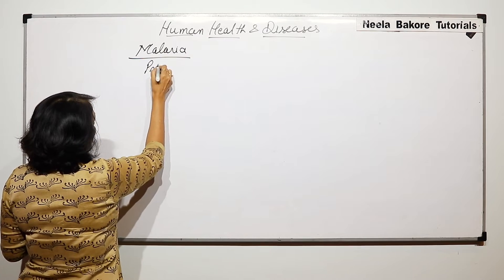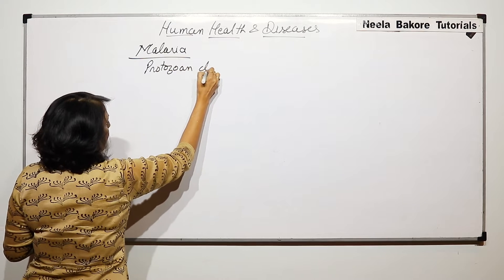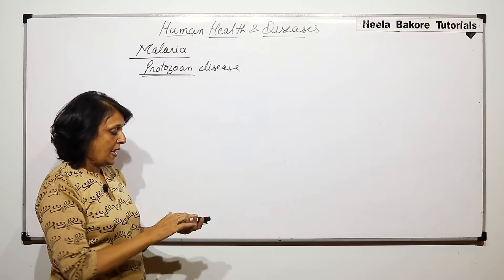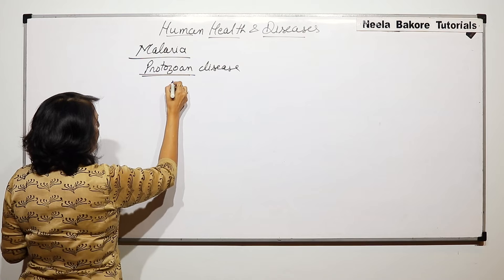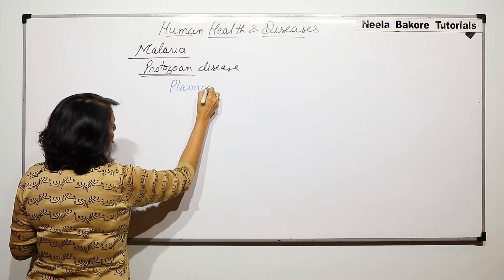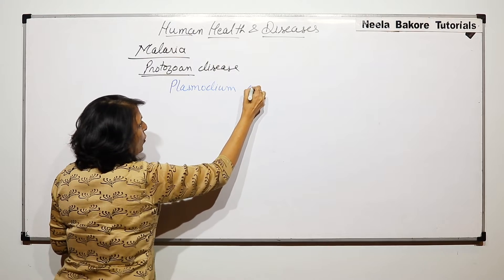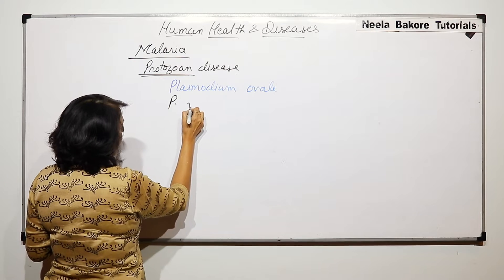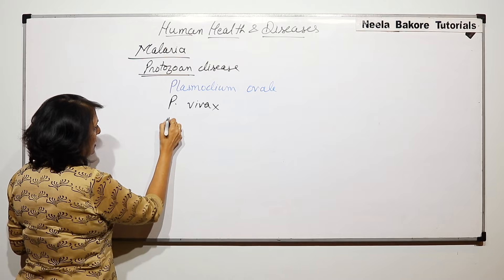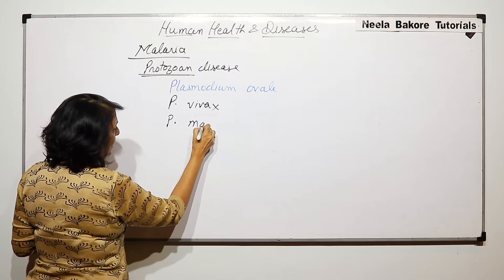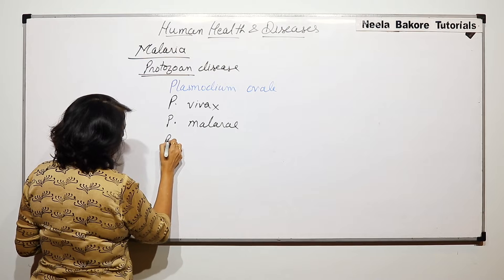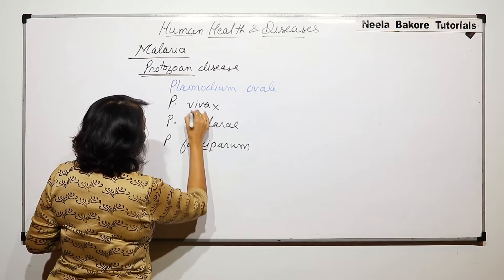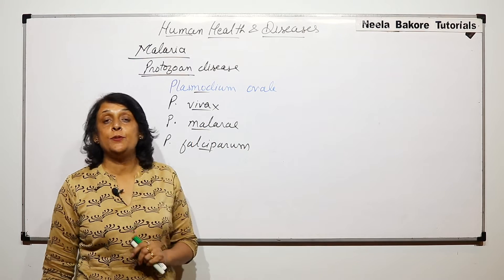It is a protozoan disease. The causative agent is a protozoan and there are four species: Plasmodium ovale, Plasmodium vivax, Plasmodium malariae, and Plasmodium falciparum — and they cause different types of malaria.